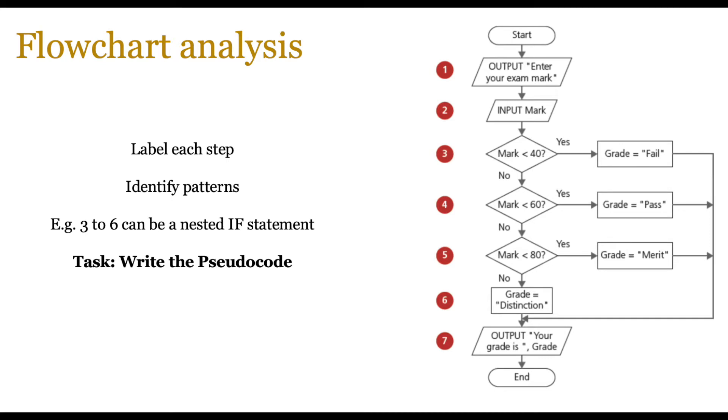The first step would be to just label every step and identify the common patterns. For example, steps three to six can probably be a nested if statement. And for each step, normally you'd be writing one line of pseudocode unless it's got two steps in there. But most of the time in exams, nobody will give you one step.